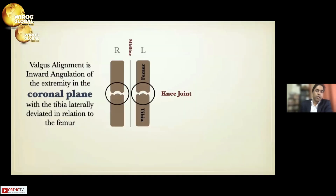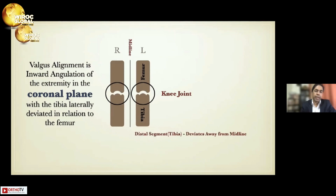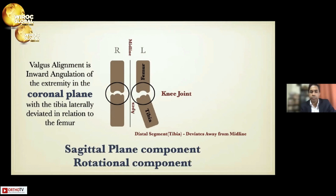Valgus alignment is an inward angulation of the extremity in the coronal plane, with the tibia laterally deviated in relation to the femur. However, this is not the case with all patients — sometimes we also have a sagittal plane component as well as a rotational component.